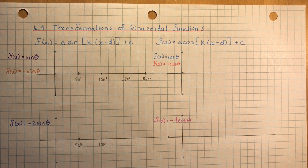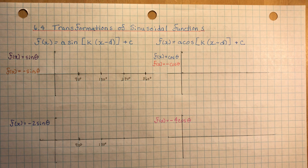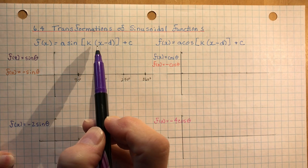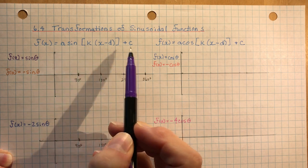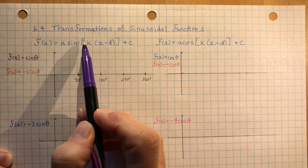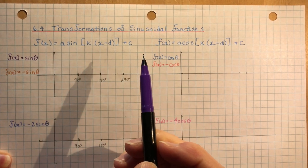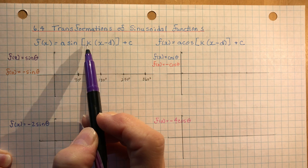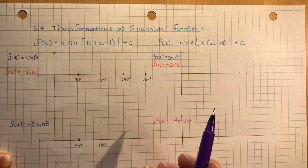Today we're going to do transformations of sinusoidal functions — in particular, we're going to look at the graphs of sine theta and cosine theta, and we're going to do all the transformations from chapter one. There are a few little tricks you'll need to know that are a bit different because we're working with sinusoidal functions. Here's our formula: f(x) = a·sin(kx - d) + c. The k value affects the horizontal — it's a horizontal change.